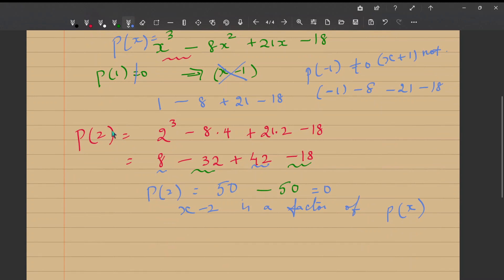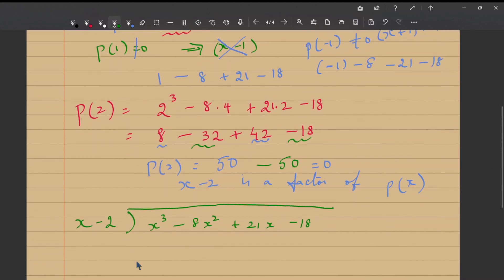I will be writing the polynomial here: x³ - 8x² + 21x - 18. All of this to be divided by x - 2. Since we have found that using the factor theorem, we have found that x - 2 is a factor of this. So now, let us do the long division. First, x³, how many times x is x³? x² times. So I write my quotient here, x².